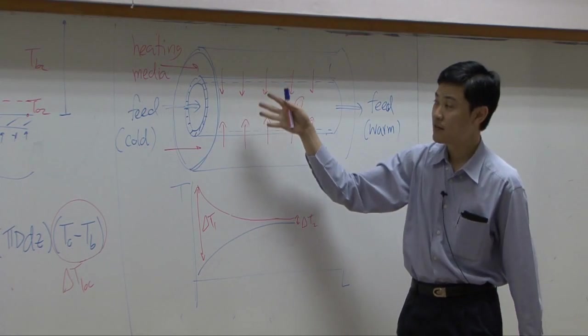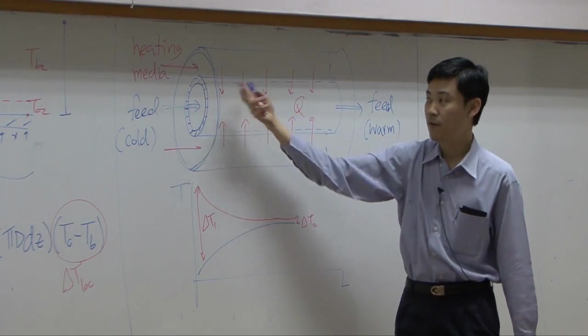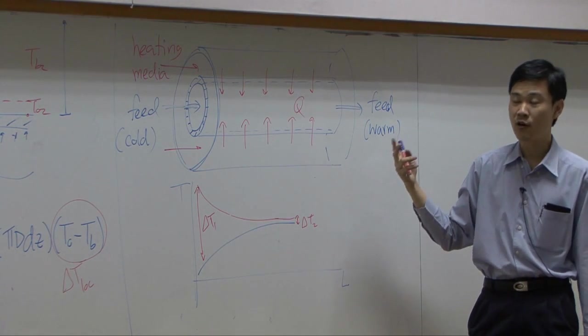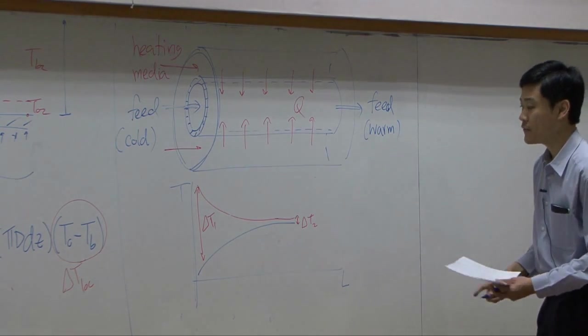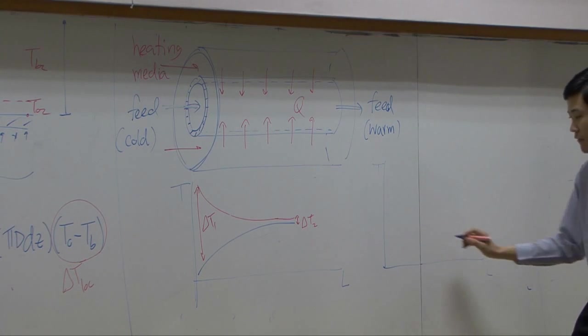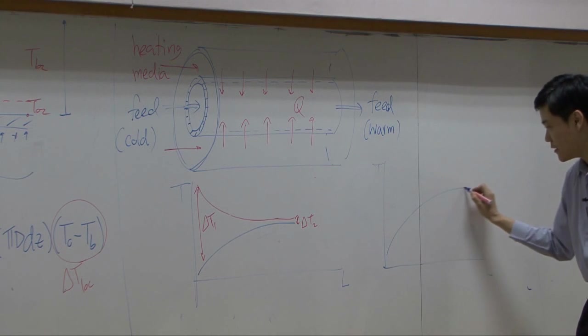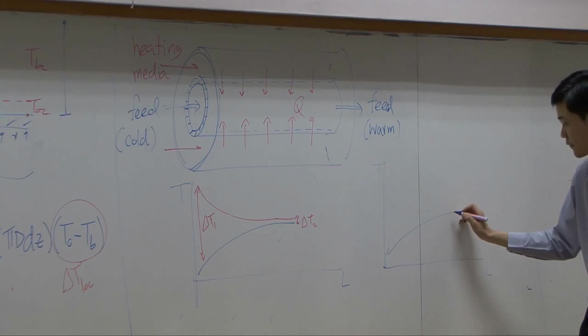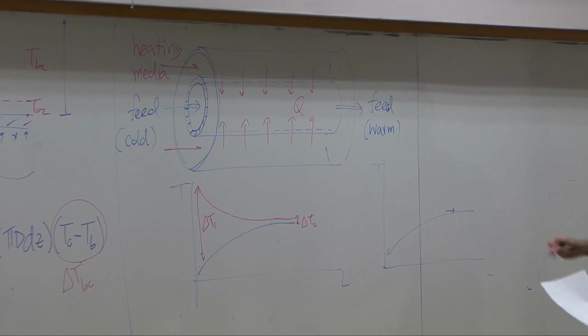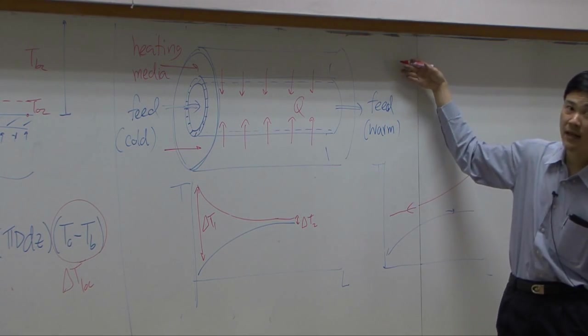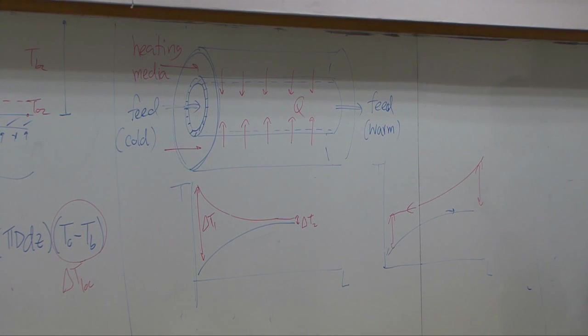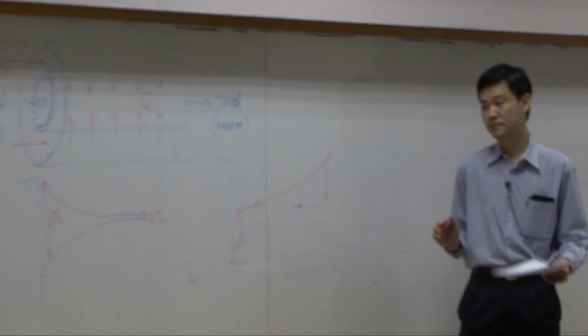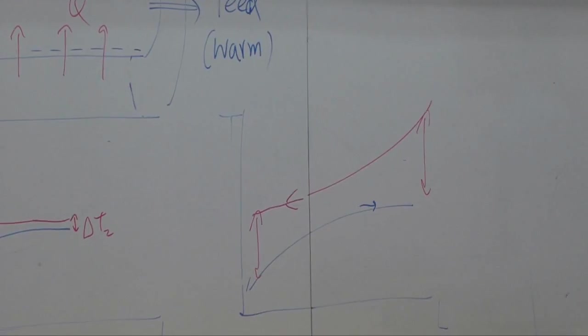You can flow the heating media co-currently. In this case, these two fluids flow in the same direction. It is called parallel flow or co-current flow double pipe heat exchanger. You can also flow counter-currently. If you flow it counter-currently, then temperature profile of the hot media, it may look something like this. If the blue line flow from the left to right, the red line may flow from the right to left. You may flow the heating media backward. If you do so, then the temperature difference would be different. The pattern of temperature difference would be different as well. This is called counter-current double pipe heat exchanger.